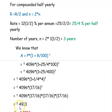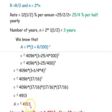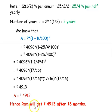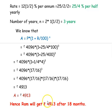The amount works out to Rs. 4,913. So the amount is Rs. 4,913. Hence, Ram will get Rs. 4,913 after 18 months, having invested Rs. 4,096 compounded half-yearly at 12.5% per annum.